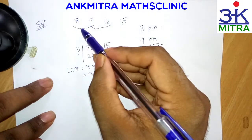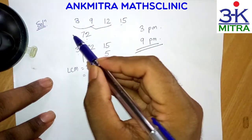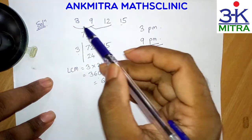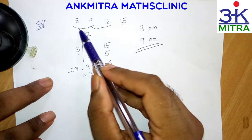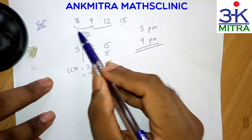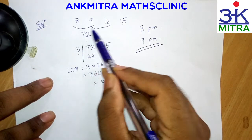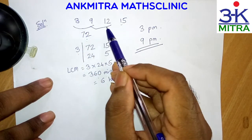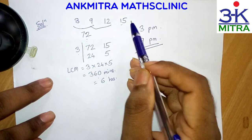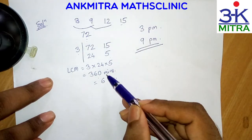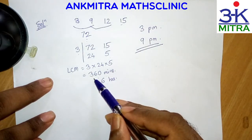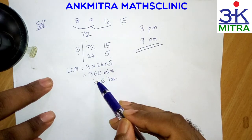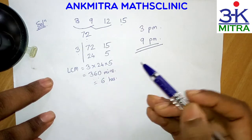Finding the LCM of these four numbers is easier this way — we start with the easiest two, then gradually find the LCM with the next number, and the next, until we arrive at the complete LCM of all four numbers.